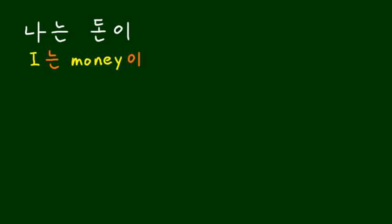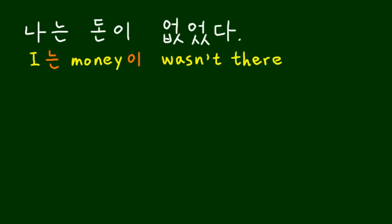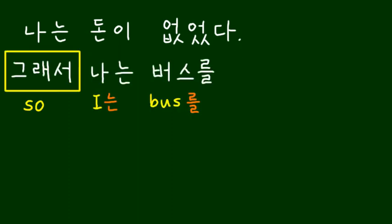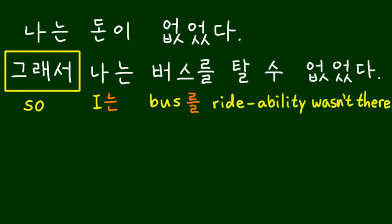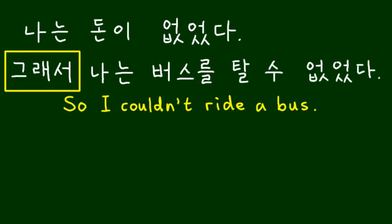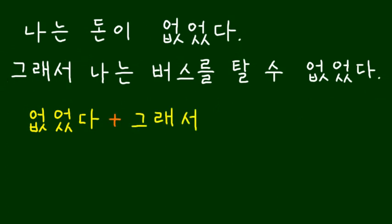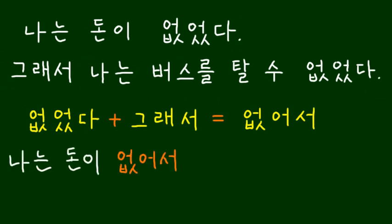나는 돈이 없었다. 그래서 나는 버스를 탈 수 없었다. You can combine those two sentences together by linking up 그래서 to the last word of the previous sentence. In this case, 없었다 and 그래서 탈 수 없었다. Together, you get 없어서. 나는 돈이 없어서 버스를 탈 수 없었다.